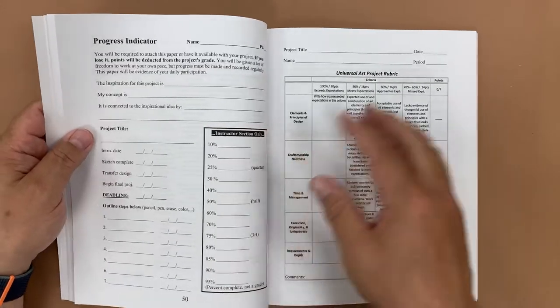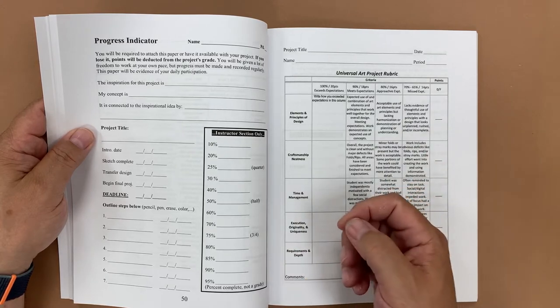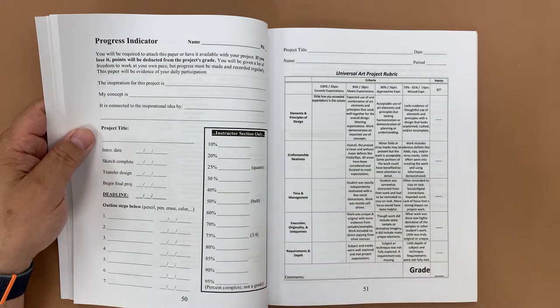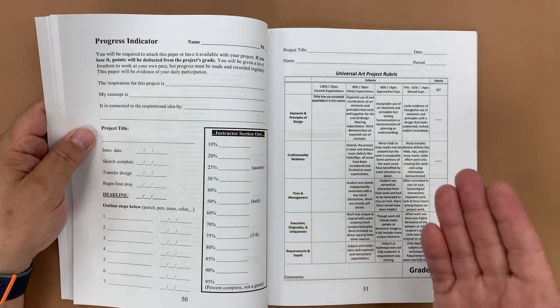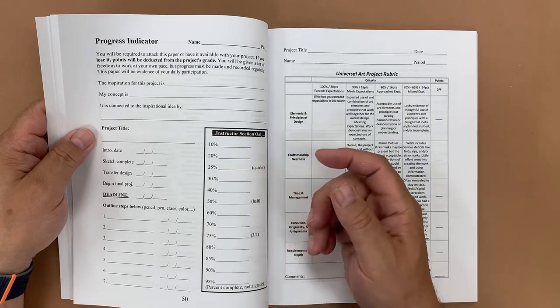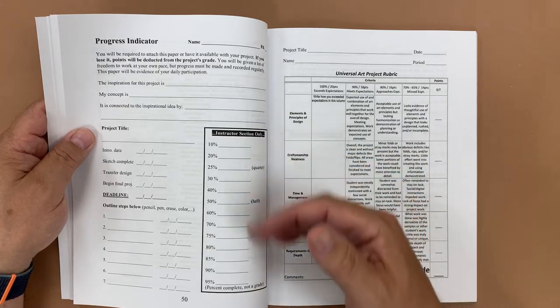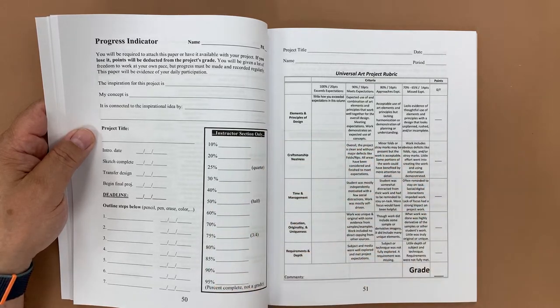Then as the students are working, I'll take a look at Johnny's project and if I feel like he's about 25 percent done, I would initial right where it says 25 percent done and we can have a conversation about what's going on in their project. If we come back two days later and they're still on 25 percent, I know that they're not progressing on their particular project, but perhaps they've jumped ahead and then maybe they're at 60 percent the next time that I see them, so I would initial there.